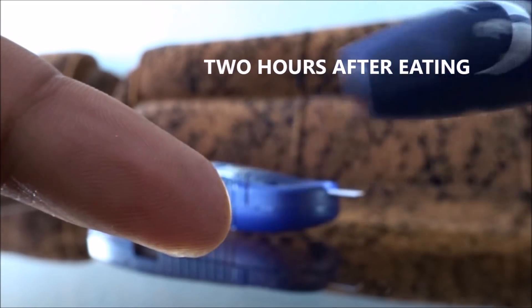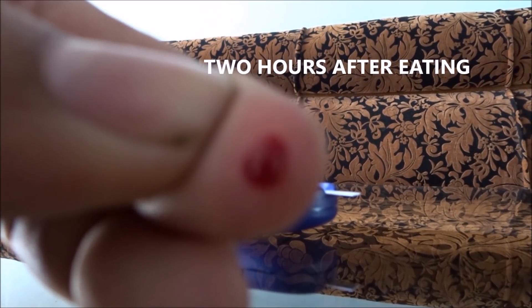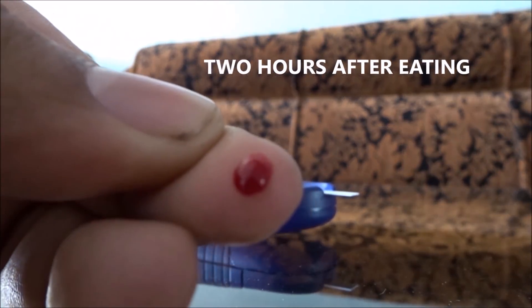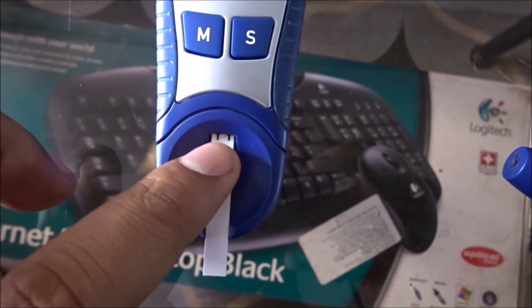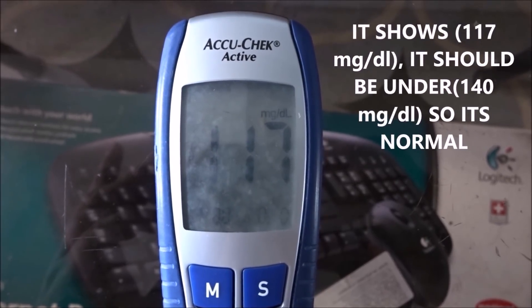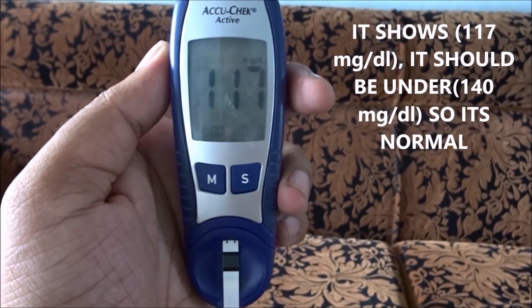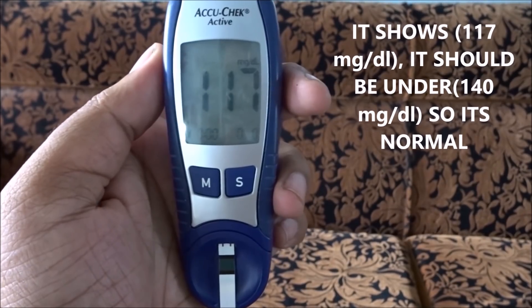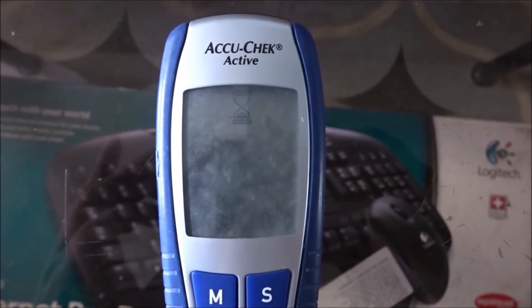And again, two hours after eating, the same way, put that blood on the right section, wait for a couple of seconds and it shows 117 mg per deciliter, and it should be 140 mg per deciliter and below. So it's normal. So glucometer is very useful for your family, so keep this machine for your home.